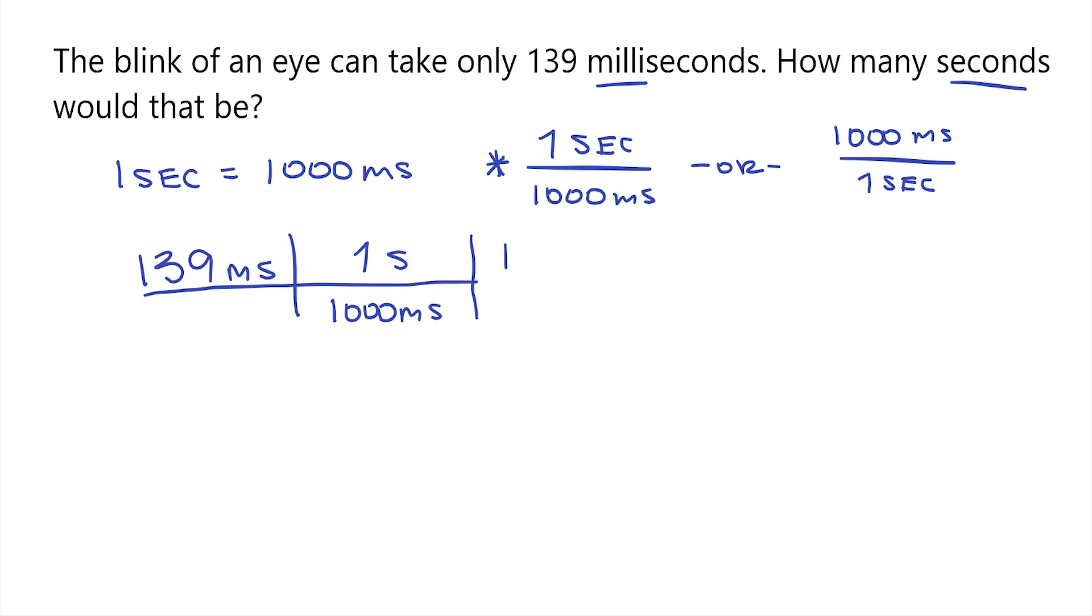Now, 139 times 1 is still just 139. Now we have milliseconds times seconds. Then on the bottom, we have 1,000 milliseconds. So now we can take those units of milliseconds and cancel them because I have milliseconds on the top and on the bottom.